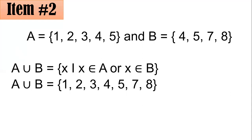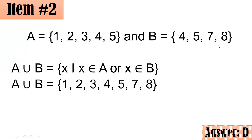Combining the terms of sets A and B and copying common terms exactly once only, we have A union B as the set containing 1, 2, 3, 4, 5, 7, and 8. Letter D.